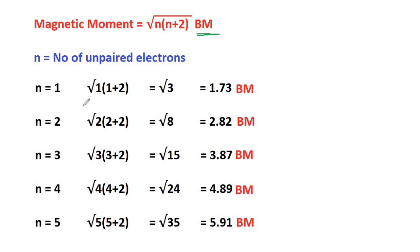Suppose the number of unpaired electrons is 1, then the magnetic moment will be root of 1 into 1 plus 2, that is root 3, which equals 1.73. For n equals 2, it will be root 8, 2.82. 3 unpaired electrons, root 15, 3.87, and it goes on like that.